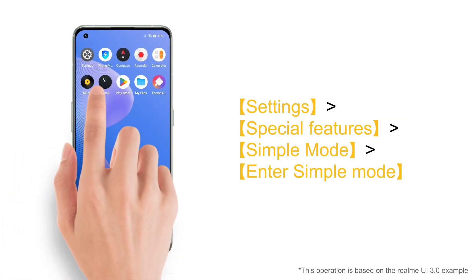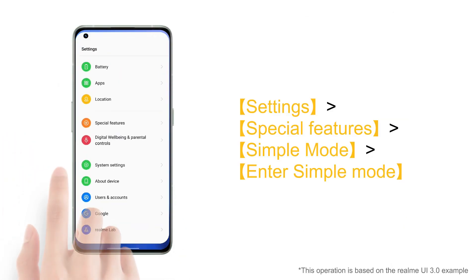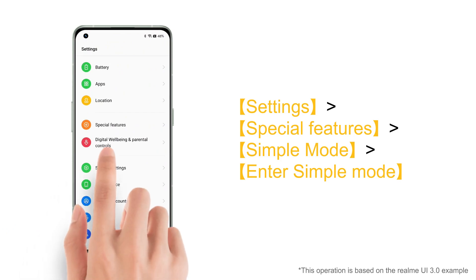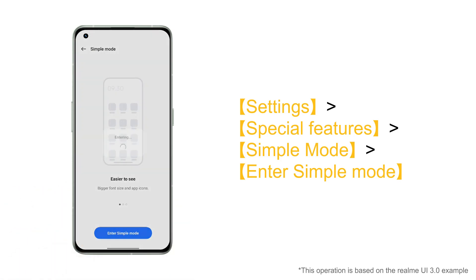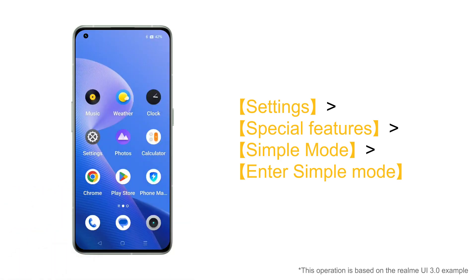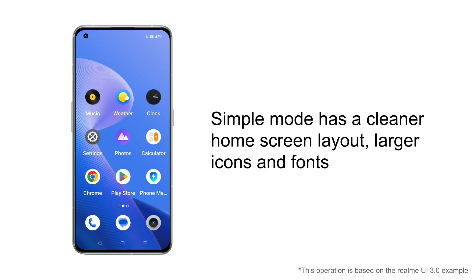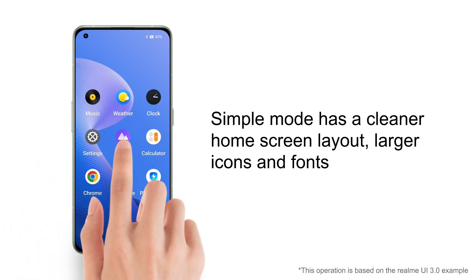To open Simple Mode: click Settings, click Special Features, click Simple Mode. After entering Simple Mode, you can see there are only two pages on the phone home screen, respectively showing the system's most used applications and uncommon applications.